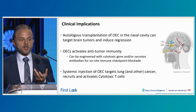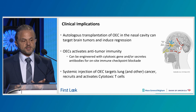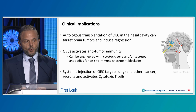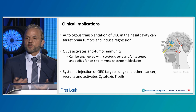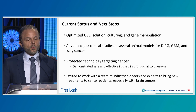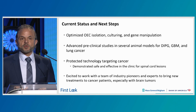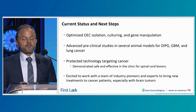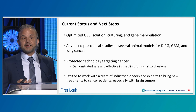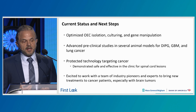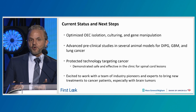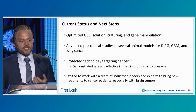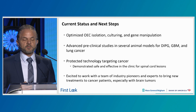So what are the clinical implications? You can do autologous transplantation of OECs in the nasal cavity that can target brain tumors and induce regression. OECs activate anti-tumor immunity. They can be engineered with cytotoxic genes or to secrete antibodies for on-site immune checkpoint blockade. Systemic injections of OECs could target lung cancer and potentially other types of cancers. As next steps, we have an optimized OEC isolation protocol, gene manipulation, and culturing. We have advanced preclinical studies in several animal models for DIPG, glioblastoma, and lung cancer. And because these cells are fully differentiated, they do not have the risk of forming tumors like stem cells. We are excited to work with a team of industry pioneers and experts to bring new treatments for cancer patients, especially for brain tumors. Thank you.